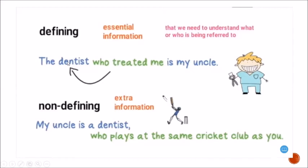We are going to have two kinds of relative clauses: defining relative clauses and non-defining relative clauses. In a defining relative clause, we give essential information — information we cannot omit — that complements our sentence and helps us understand what or who is being referred to. For example: 'The dentist who treated me is my uncle.' The clause 'who treated me' defines which dentist we are talking about.